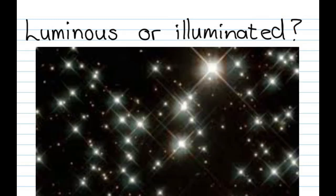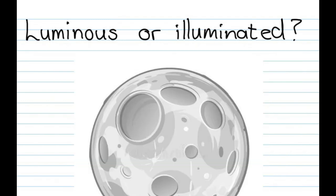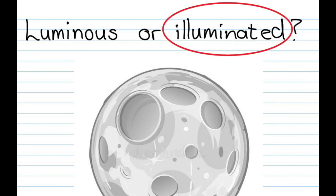How about the stars? Stars give off their own light, so they would be luminous. And the moon? The moon does not give off its own light but merely reflects light from the sun, which would make it illuminated.